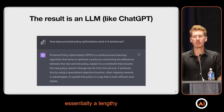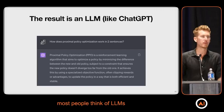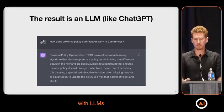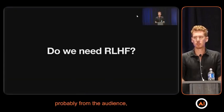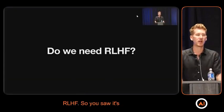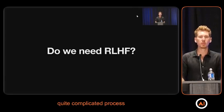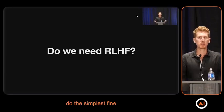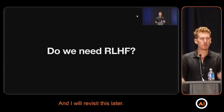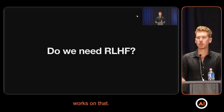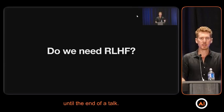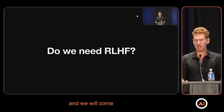So this was essentially a lengthy introduction to LLMs and how we define the term LLMs. When most people think of LLMs, these are the three stages we usually associate with them. There's a big question probably from the audience about whether we even need RLHF — it's a quite complicated process, and do we actually even need to do all of this? Can we just do the supervised fine-tuning and be done with that? I will revisit this later. There are some interesting works on that and it's a future research direction, but I'll keep this question open until the end of the talk. It's a little cliffhanger, and we will come back to that later.